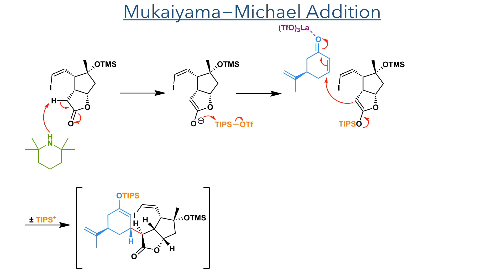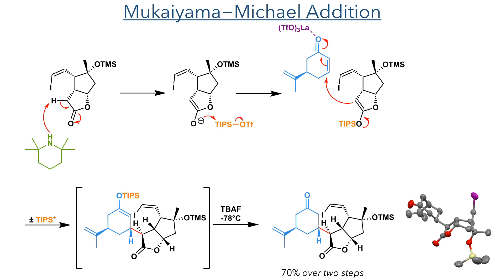With this iodoalkene in hand, it could then take part in the critical Mukaiyama-Michael addition. The lactone is deprotonated by TMP, forming an enolate that is silylated with TIPS triflate. Meanwhile, fragment 1 is activated by coordination to lanthanum triflate, making it more electrophilic and allowing it to be attacked by the silyl enol ether. This stereoselectively attacks into the less sterically hindered side of the ketone. The TIPS group migrates to the norcarvone moiety during this reaction, and it was selectively deprotected in the presence of the TMS group using TBAF at minus 78 degrees, to produce the target compound with a 70% yield over two steps.